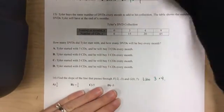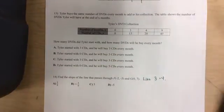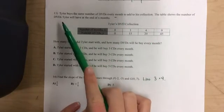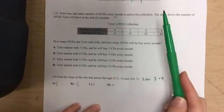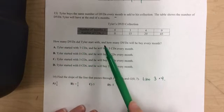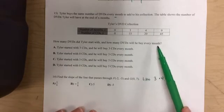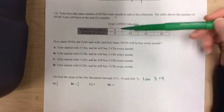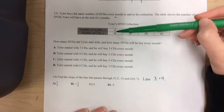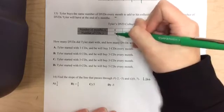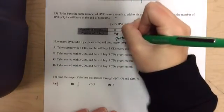I'm going to scoot the paper down so that we can see number 13. So number 13 is about Tyler. It says Tyler buys the same number of DVDs every month to add to his collection. The table shows the number of DVDs that Tyler will have at the end of x months. So we have a lovely table. Let's look at the question. How many DVDs did Tyler start with and how many DVDs will he buy every month? So the start with is pretty simple. So let's eliminate some answers. It says that at zero months, he had zero CDs. So that means that he started wherever x is zero. We want to know what y is. Well, y is zero. So that means that he started with zero CDs.